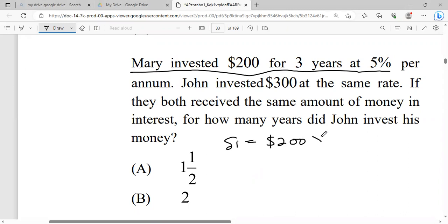Now simple interest is the principal times the rate times the time, which is 5%. And of course we know that because it's a percent, it comes over 100. So what this means is that 2 times 3 is 6, 6 times 5 is 30. So we know that Mary received $30.